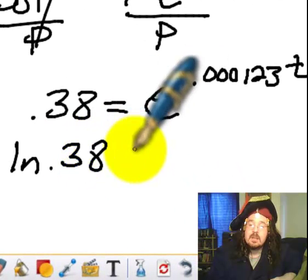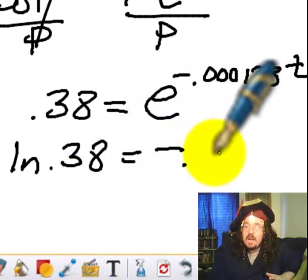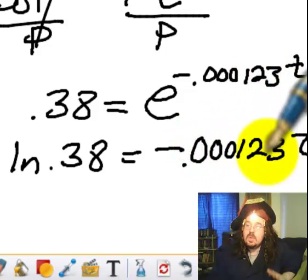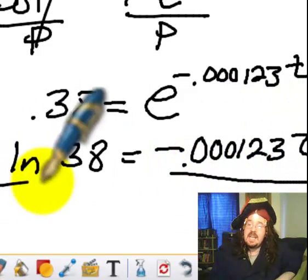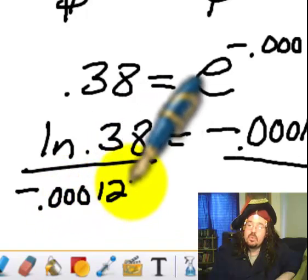And if I take the ln of e, that just cancels, so I'm going to skip writing it this time. You don't have to write it once you know the process that well. And then divide again, and I get 0.000123T.